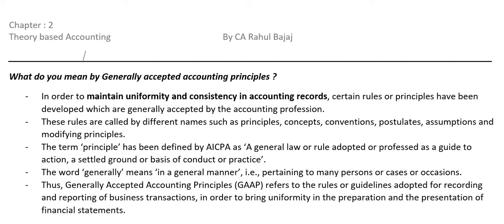Currently, India has its own separate GAAP, the US has its own separate GAAP, and European countries have their own GAAP. So there is still inconsistency. Due to increase in technology, the entire world has become very small. One person may want to invest in the US, Singapore, or Europe, but is not able to compare the financials. So to maintain uniformity and consistency, everyone should prepare on the same principles.